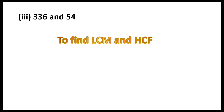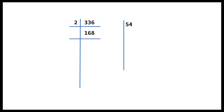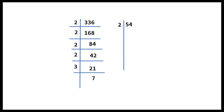The next problem is 336 and 54. Both are even numbers. To find LCM and HCF by prime factorization: 336 is divisible by 2; 2 one-hundred-sixty-eights are 336. Again even: 2 eighty-fours. Again even: 2 forty-twos. Again even: 2 twenty-ones. 21 is divisible by 3; 3 sevens are 21. 7 is a prime number; 7 ones are 7.